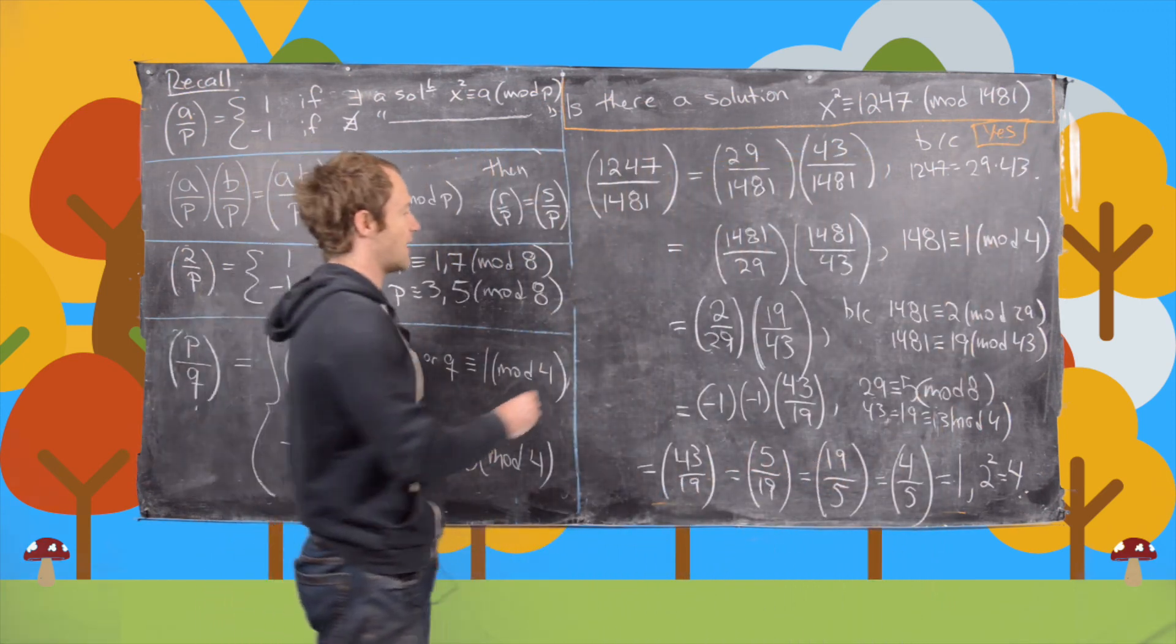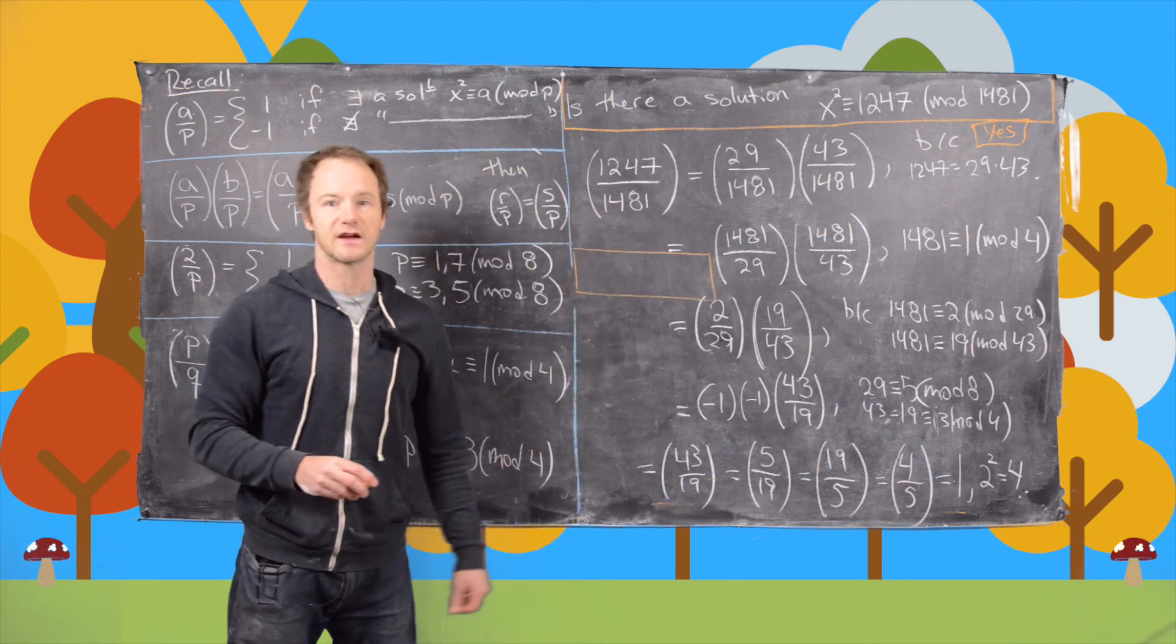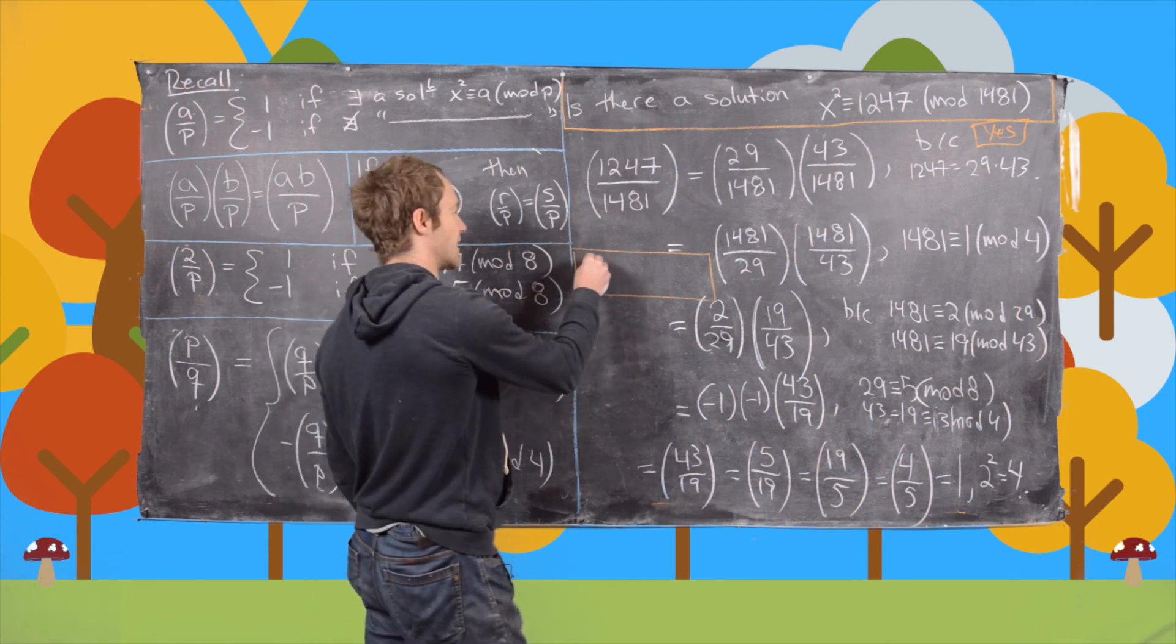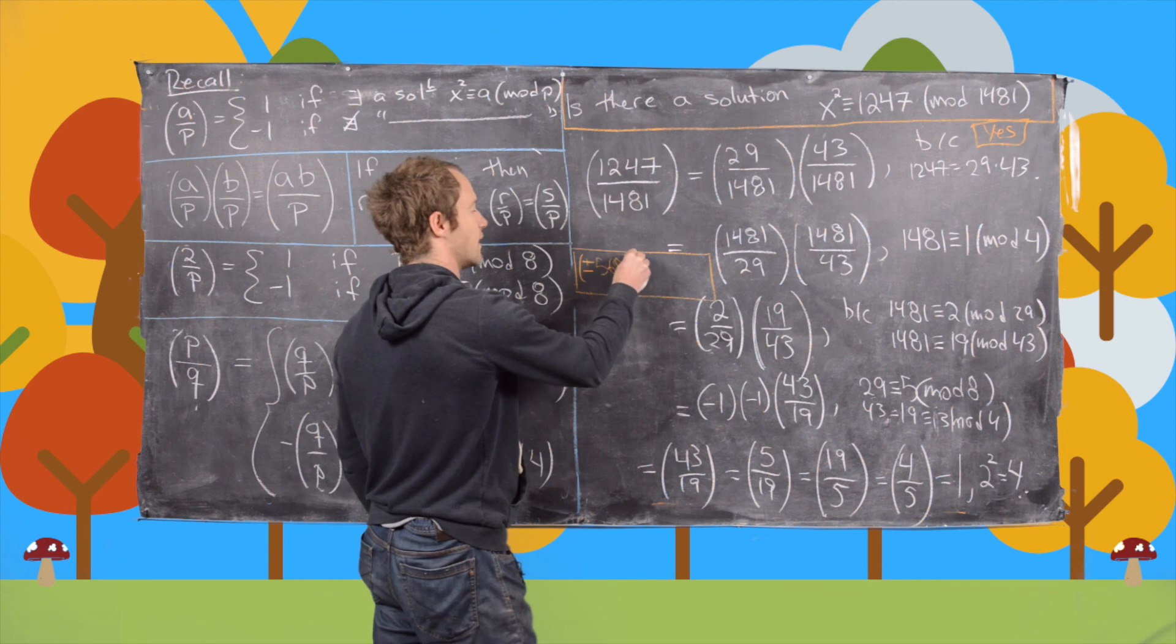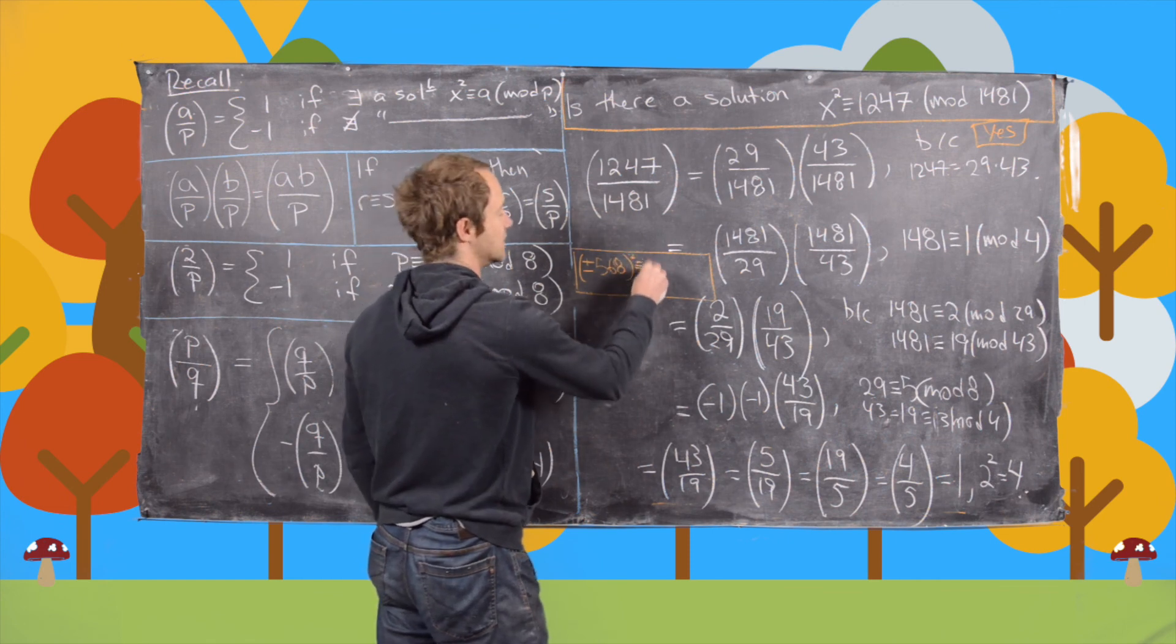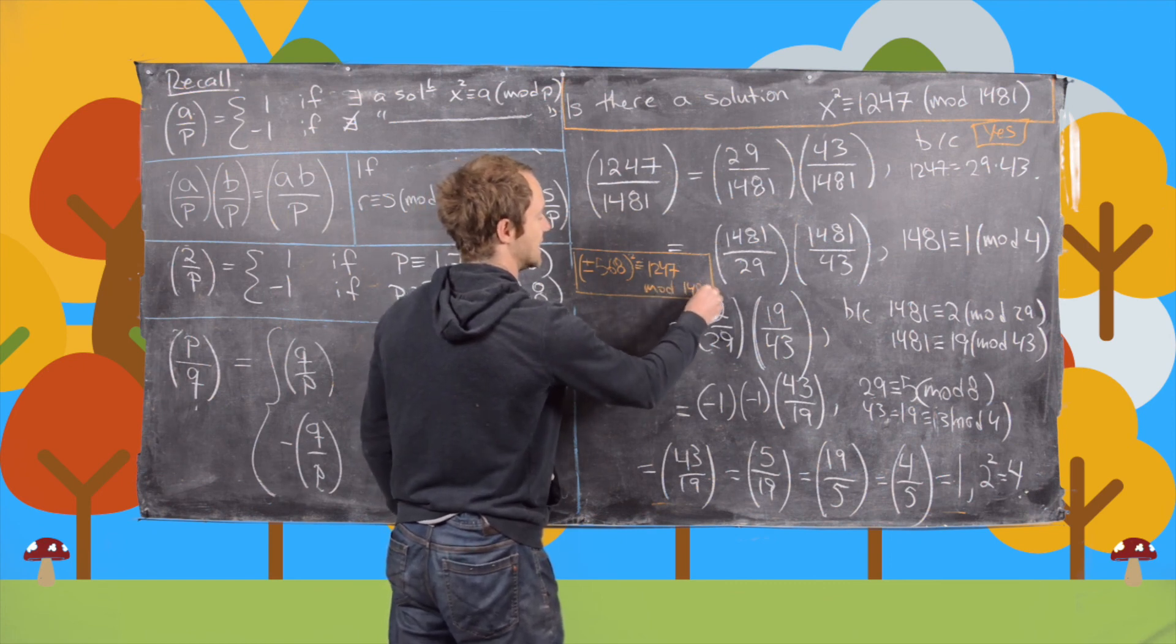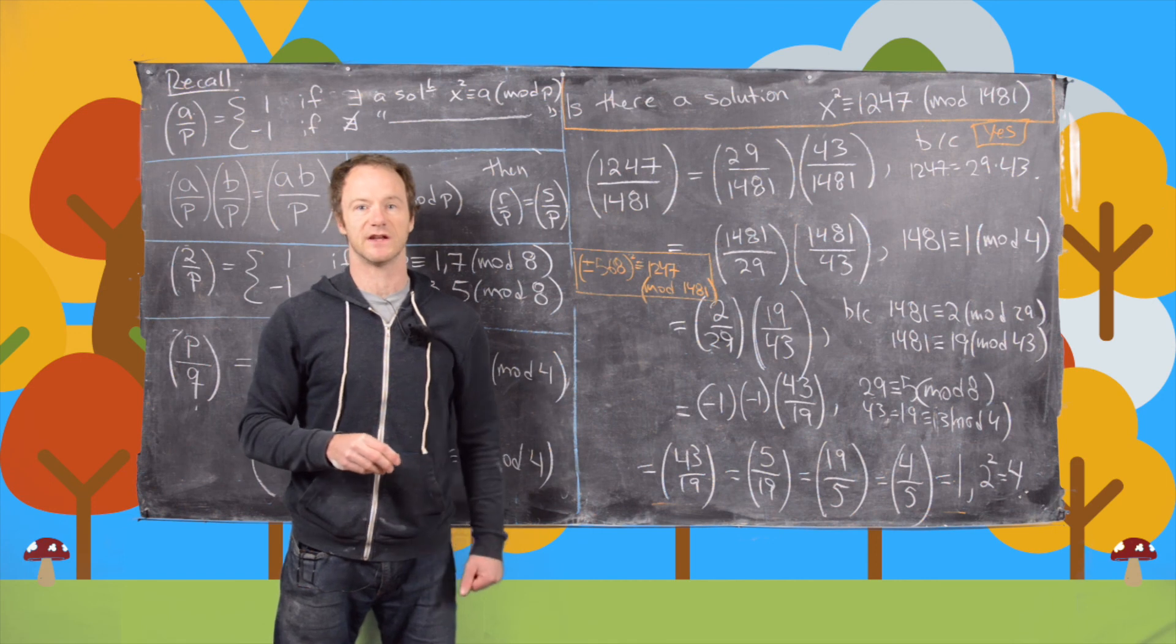And in fact, I'll fit it in right here. We can check via computer. You wouldn't really want to check this by hand. You can check via computer that plus or minus 568 squared is congruent to 1247 mod 1481. And so that's your solution. This is the end of the video.